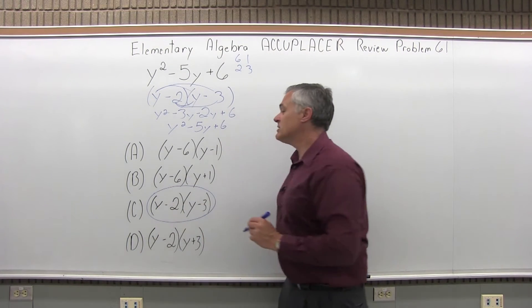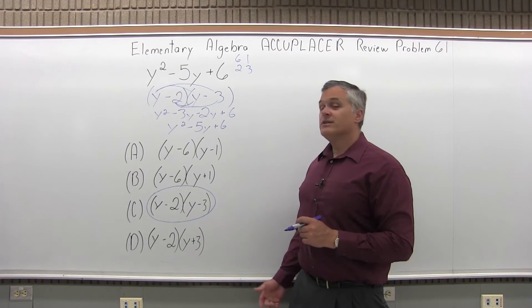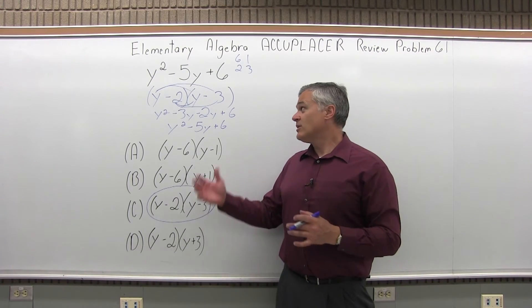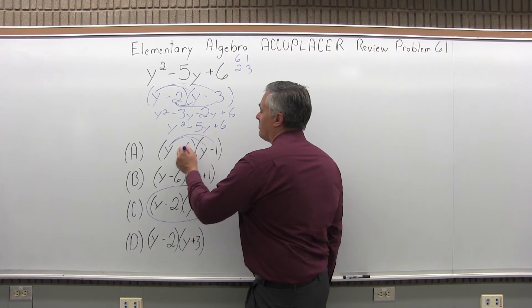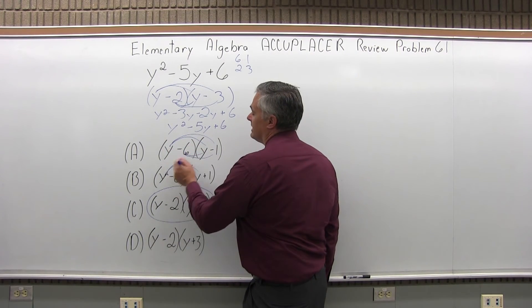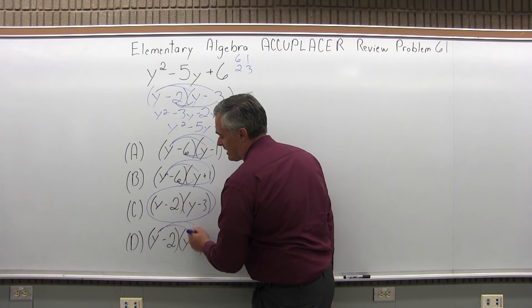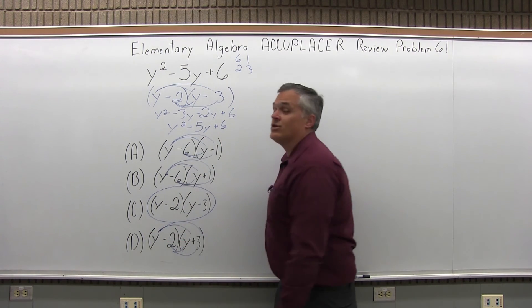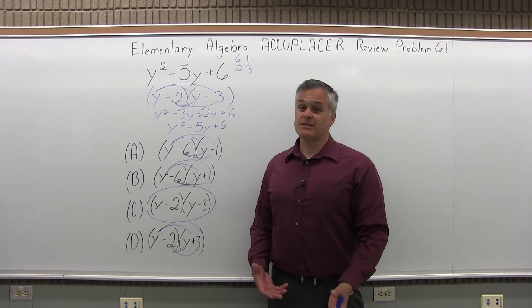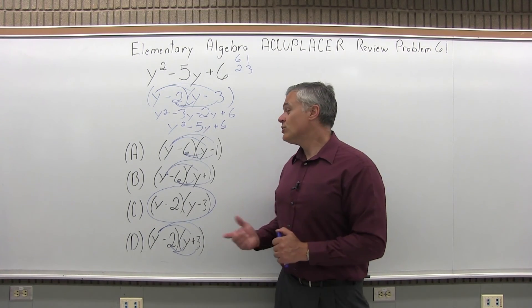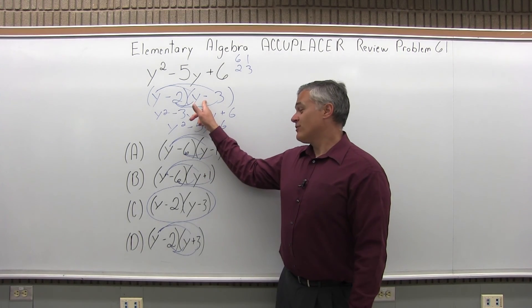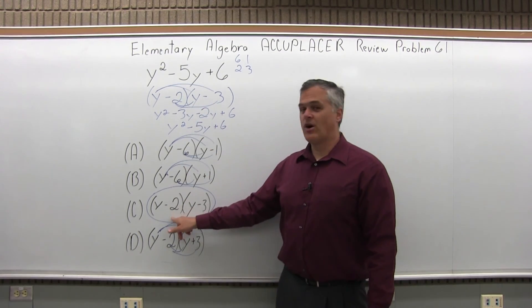The answer for this problem is option C. Now where this is an untimed test, and let's say you don't remember the rules for factoring, you could multiply out each option and combine your like terms and see what type of answers you're getting. On a timed test, that wouldn't be a good strategy. But the Accuplacer is untimed, so you could do that, but it's certainly quicker if you remember how to factor and you would get option C.